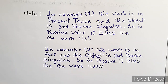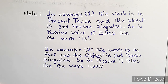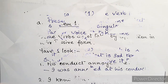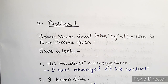Take note: in example one, the verb is in present tense and the object is third person singular, so in passive voice it takes the be-verb 'is.' In example two, the verb is in past tense and the object is third person singular, so in passive it takes the be-verb 'was.'